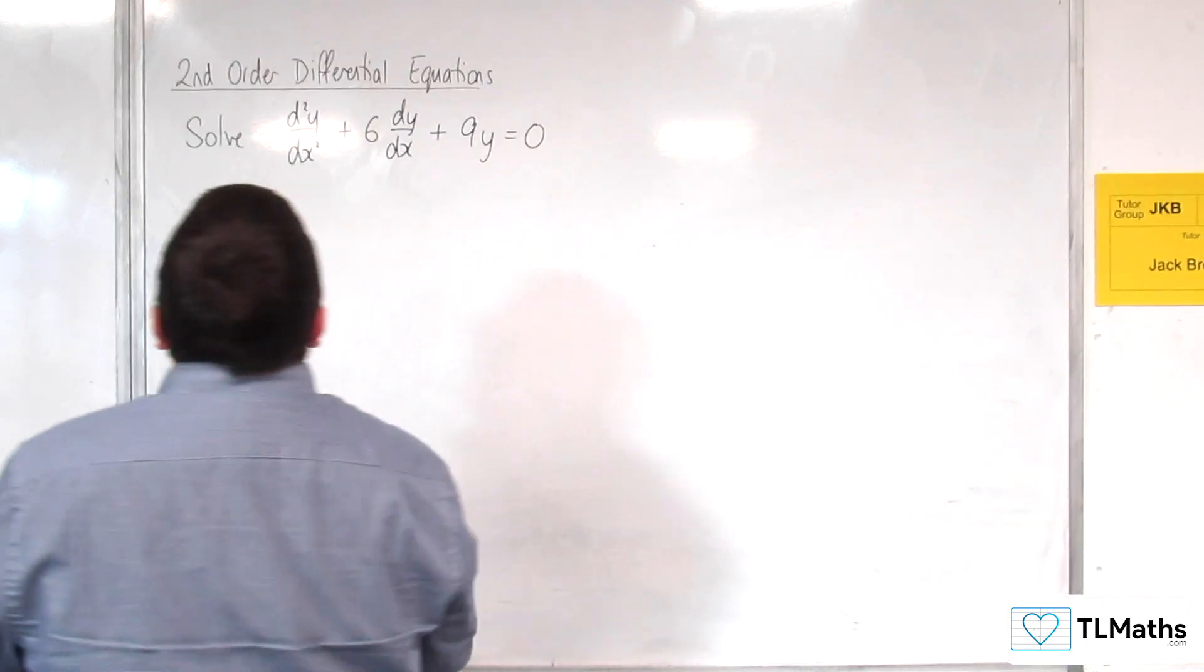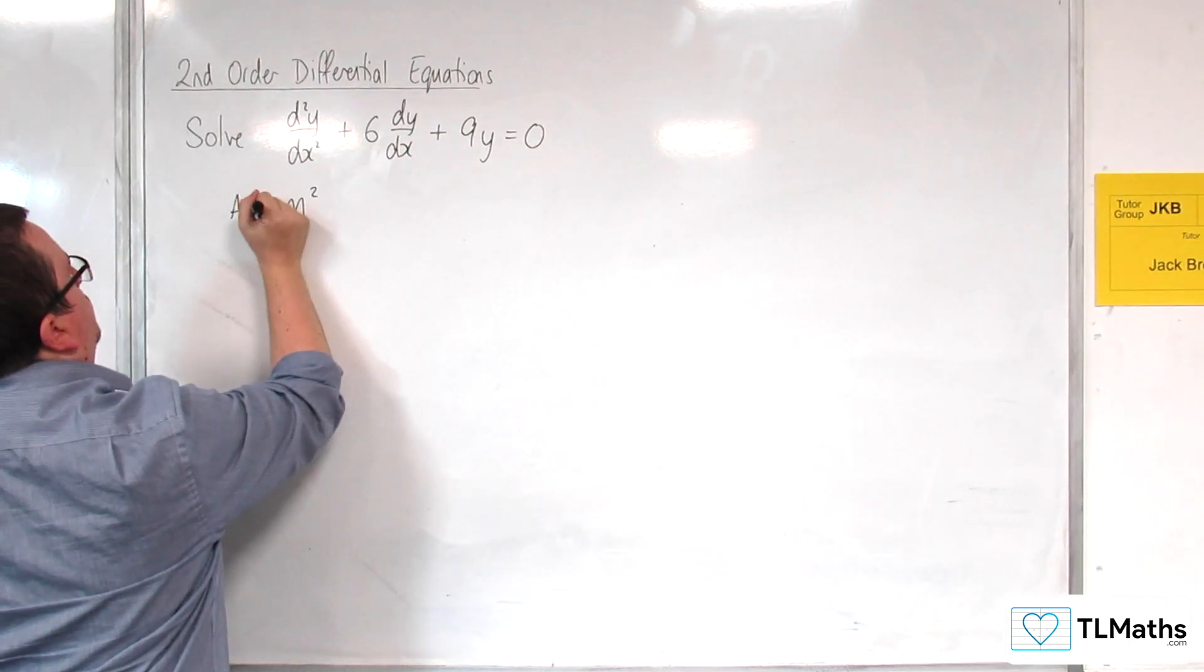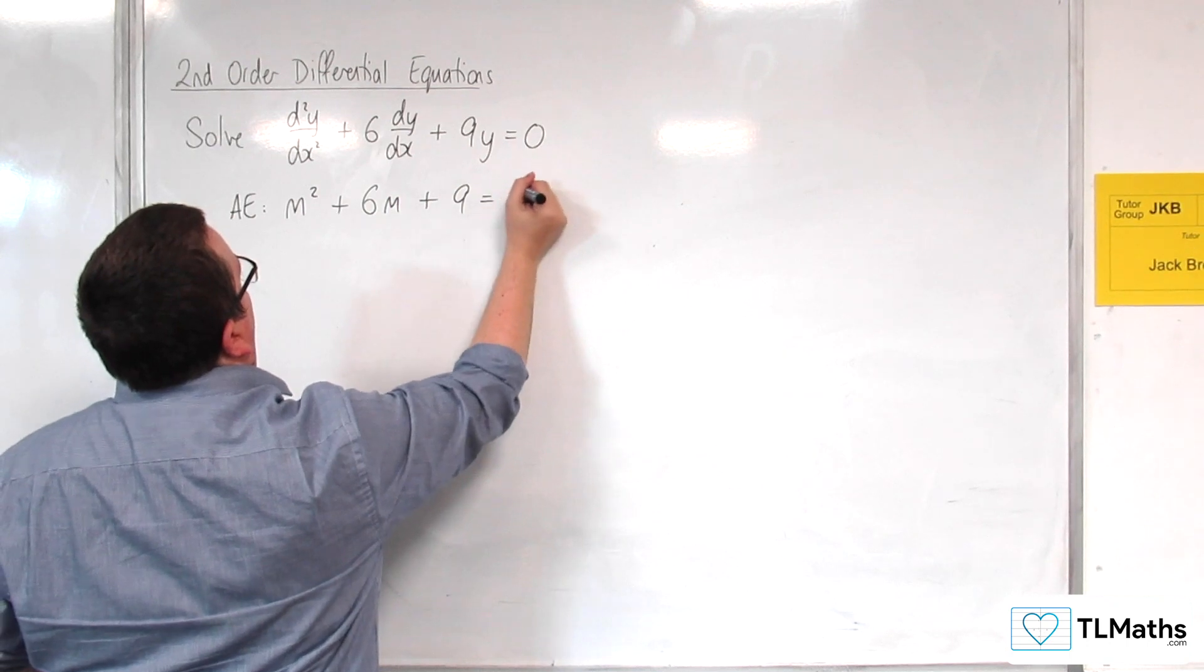I'm going to go straight to the auxiliary equation, m². I'm going to write that down: m² + 6m + 9 = 0.